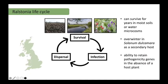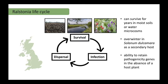Looking at Ralstonia's life cycle from a UK temperate perspective: it survives in the soil for years and in river waters, and can overwinter in secondary hosts such as Solanum dulcamara. In this survival stage it retains pathogenicity genes even in the absence of a host plant. After infecting the host and causing bacterial wilt disease, the plant dies and the bacteria recolonize the soil. Dispersal occurs via contaminated seeds, propagation materials, or farming equipment.